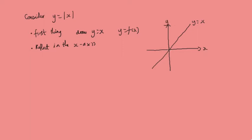Then what we do is we reflect in the x axis. So the part of the line that is below the x axis, we're going to reflect up here. So we take this up to here. So what the modulus of x looks like is going to be this.